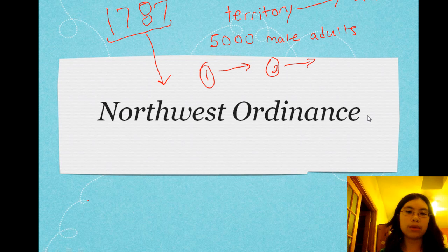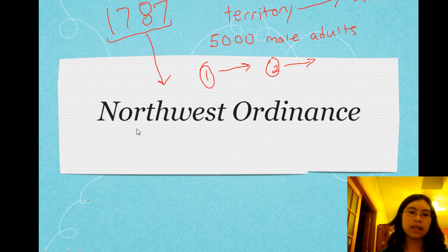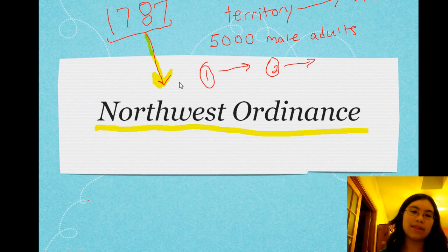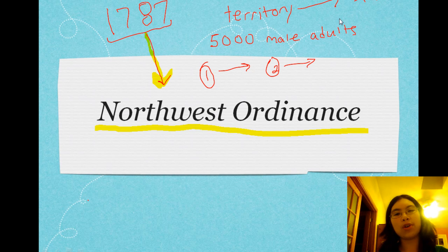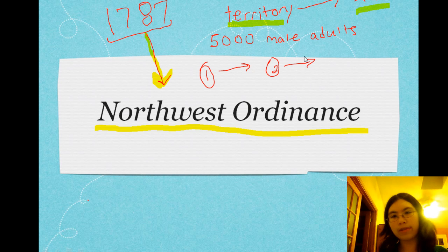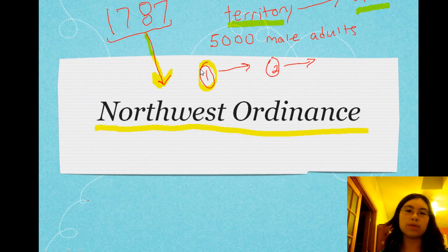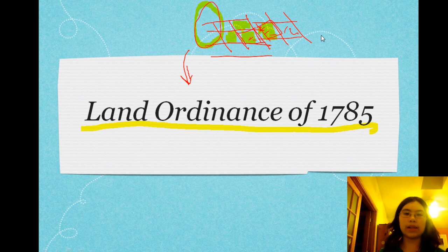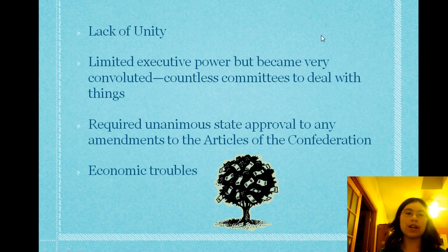Then there was the Northwest Ordinance, which basically said that if you want to become a state, you have to go through some proving first. People were scrambling to eat up land, new states were being made, and it was getting out of control. So in 1787, the Northwest Ordinance said: before you can become a state, you have to be a territory ruled by Congress-selected officials. Once you have 5,000 male adults you can apply for new territory status, and after 60,000 people you can become a state.